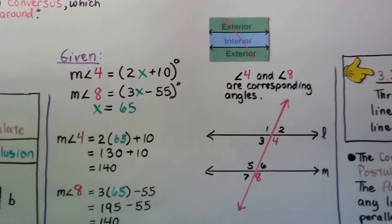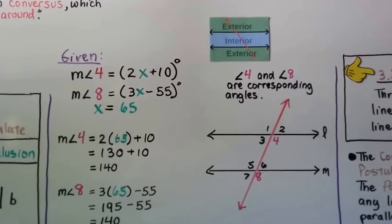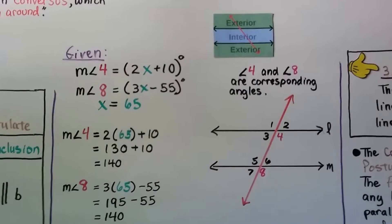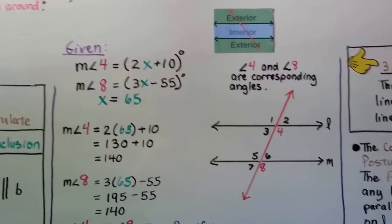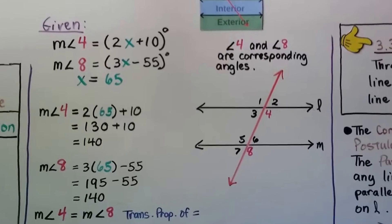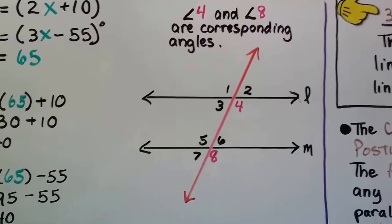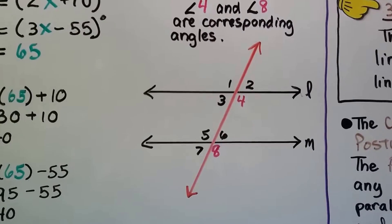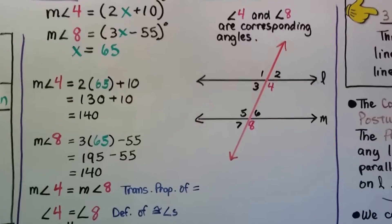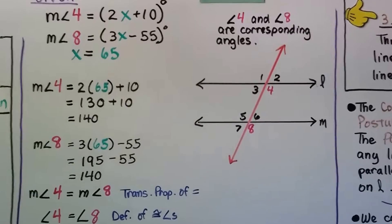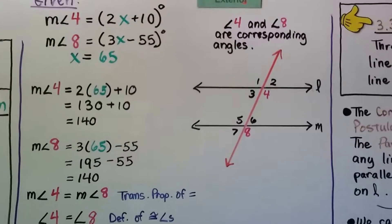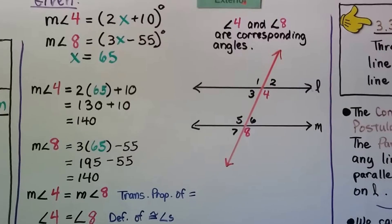Here we have a given and a diagram. The given says the measure of angle 4 is equal to 2x plus 10 degrees, and the measure of angle 8 is equal to 3x minus 55 degrees. It's also given that x equals 65. So we can substitute 65 for x in the two expressions. The measure of angle 4 equals 2 times 65 plus 10, which equals 130 plus 10, which equals 140. And the measure of angle 8 equals 3 times 65 minus 55, that's 195 minus 55, which is 140.